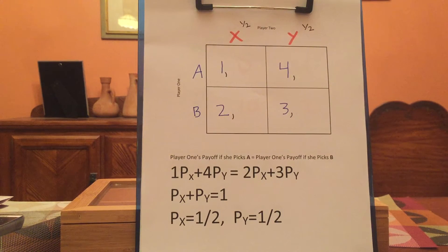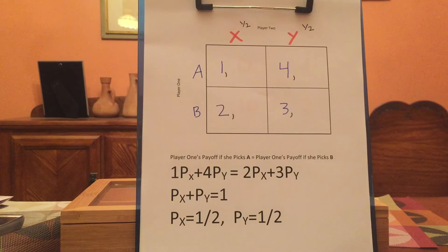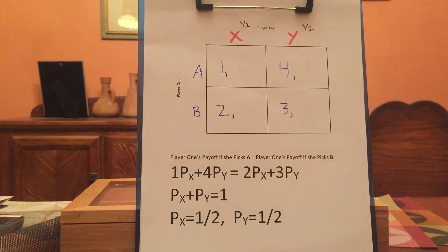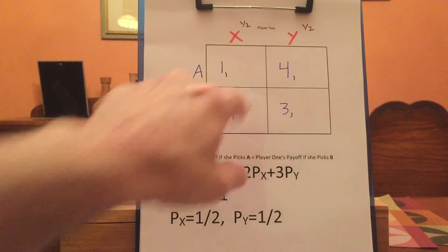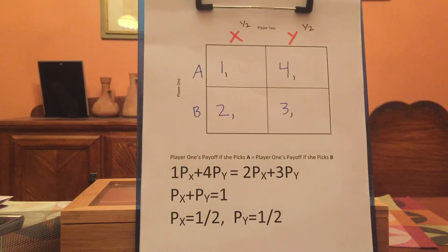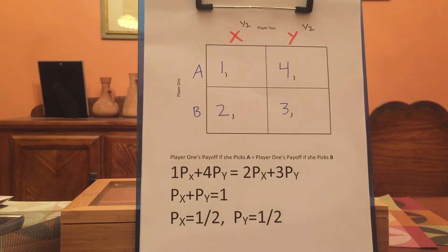Today we're going to learn how to solve for a mixed strategy Nash Equilibrium — meaning we're going to figure out how we can solve to get each player to be willing to mix. In this game, I've just written down the payoffs for player one, so let's look at what we need to happen for player one to be willing to randomize.